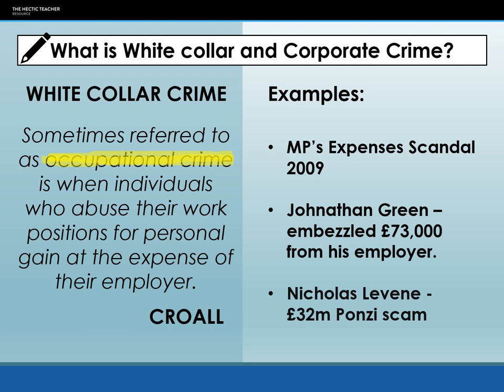The final example is Nicholas Levine, who orchestrated a £32 million Ponzi scheme involving celebrities and very rich people. A Ponzi scheme is where people give you money to invest in the stock market with an expected rate of return. Levine didn't actually invest the money — he spent it. He then got more people to invest and used their money to pay back the original investors, who put more money in, which he used to pay back others while spending the additional funds on himself. So these people thought they were going to get a lot of money back, but in fact they were going to get nothing at all.